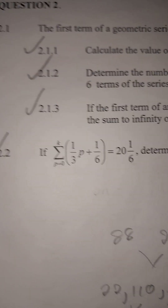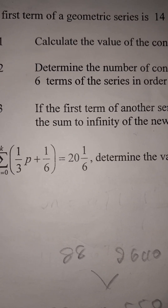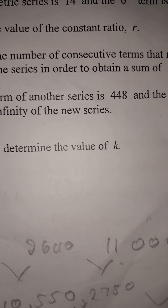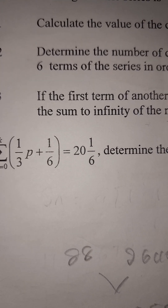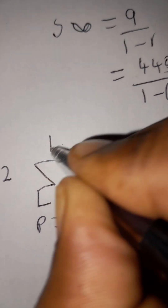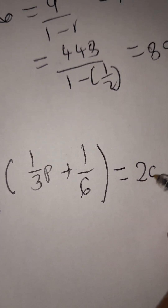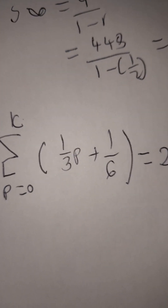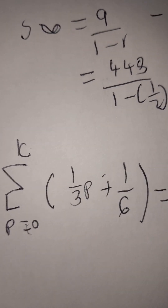At 2.2: sigma notation from p = 0 to k of the expression (1/(3p) + 1/6) equals 20 and 1/6. We need to determine the value of k. First, formulate the series by substituting p = 0: 1/(3×0) + 1/6 = 1/6, so the first term is 1/6.